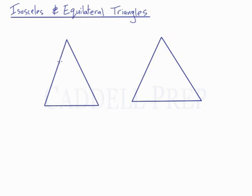In an isosceles triangle, we have that two sides are the same. So here we have isosceles.